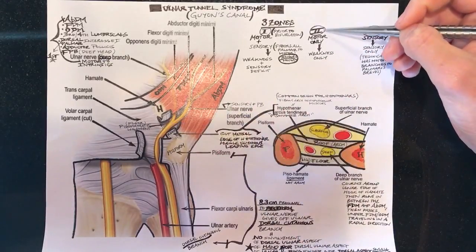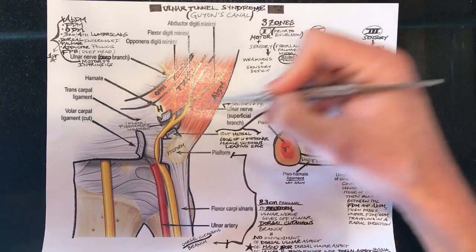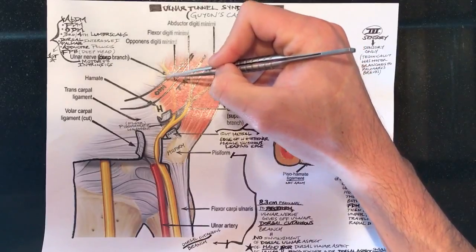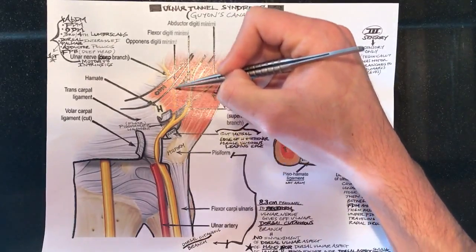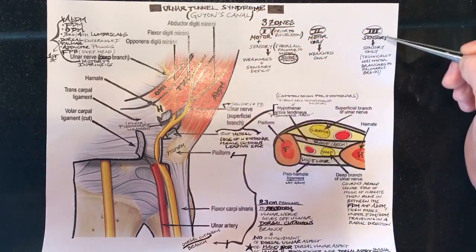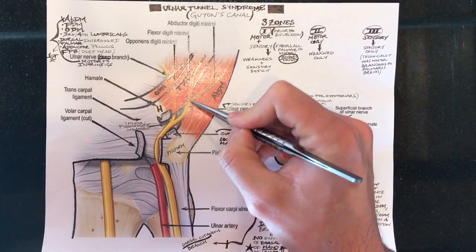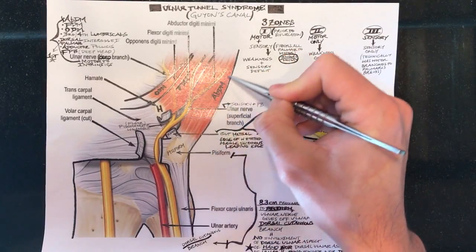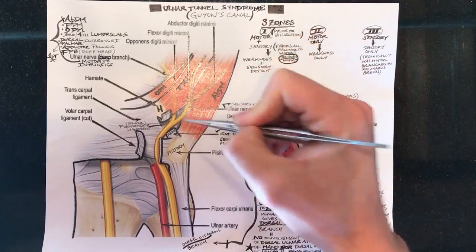After the bifurcation you get to zone two. Zone two is motor only so basically this is considered zone two the deep branch.